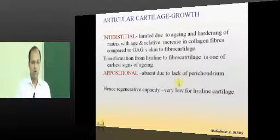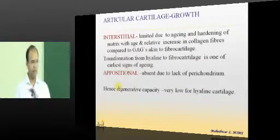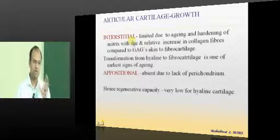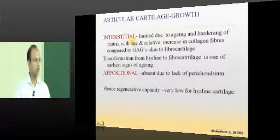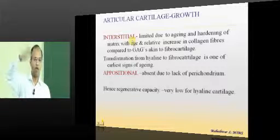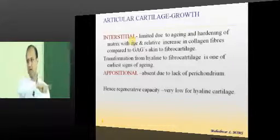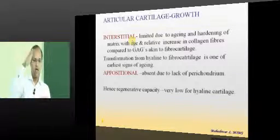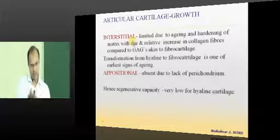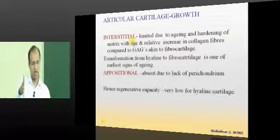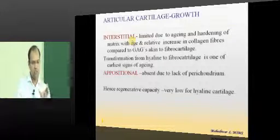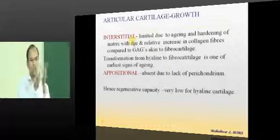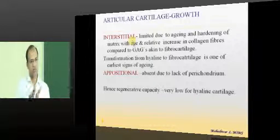The basic problem with the hyaline cartilage is it does not have a perichondrium and hence there is no appositional growth. Whatever growth the cartilage should have, it has from interstitial type of growth. Appositional growth is layer by layer growth of a structure. Appositional growth of bone means once the bone has formed, the periosteum, the cambium layer forms one layer. It comes and adds to the already existing thickness of the bone, that is the appositional growth of the bone.